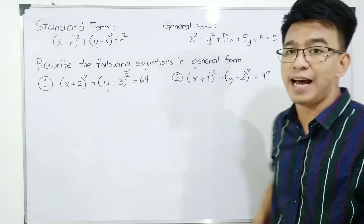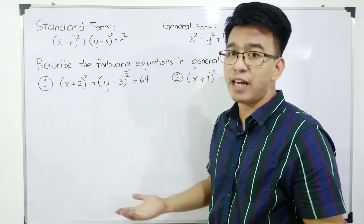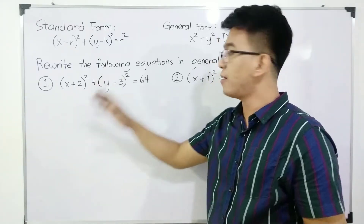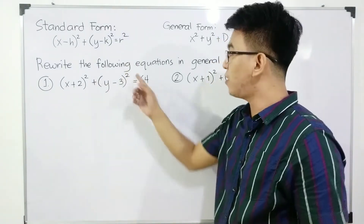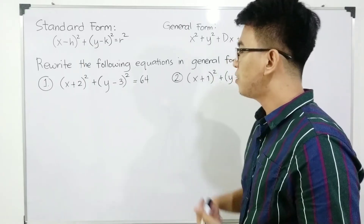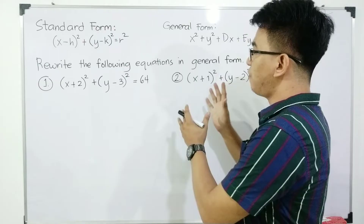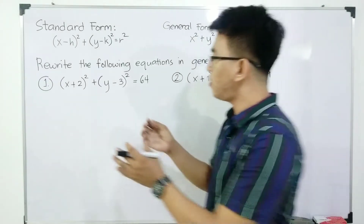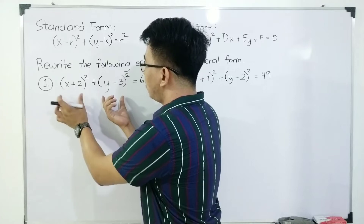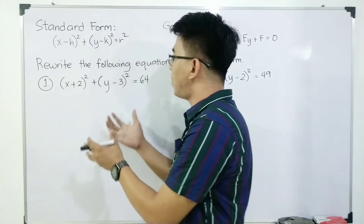Now, let's start with item number one. We are given the equation (x plus 2)² plus (y minus 3)² is equal to 64. How are we going to transform this one into general form? Basically, all you need to do is expand these two square binomials and then simplify.